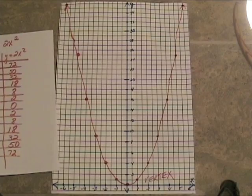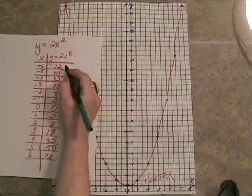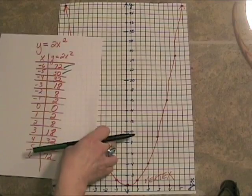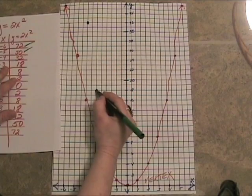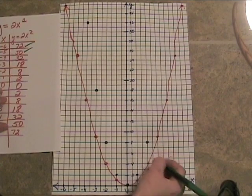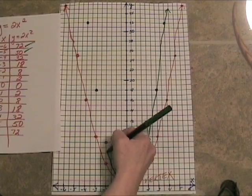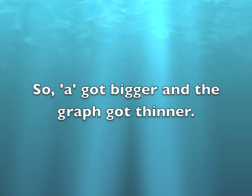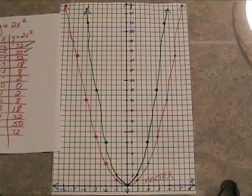Negative 6, 72. We go over to negative 6, 72. That goes off the graph. These two went off the graph. How about negative 4, 32. So we go there. And we still have positive 1, 2. Let's take a look at this parabola. It got skinnier. Wow.